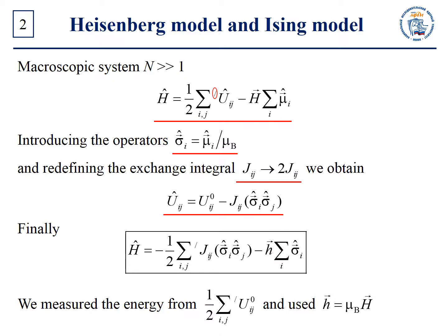Our Hamiltonian takes the following form, where we measured the energy from this term and used the following designation. Note that the operators σiz have two eigenstates — arrow up and arrow down — with eigenvalues plus 1 and minus 1 respectively.